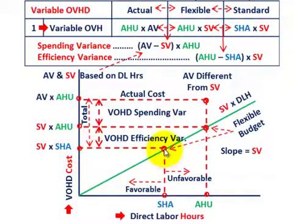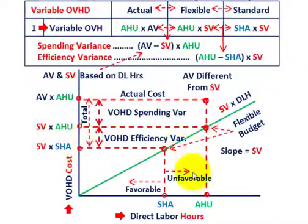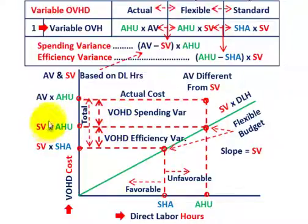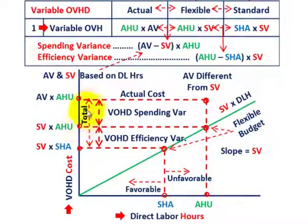We've defined our first point: standard hours allowed times the standard variable rate — that's the variable cost established by our standard. Then for actual hours used, move up the flexible budget line and across to the y-axis. That gives us the standard variable rate times the actual hours used, which is our flexible amount — actual hours times the standard variable rate equals our flexible budget amount.